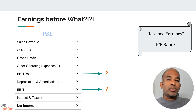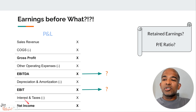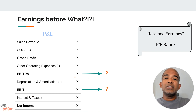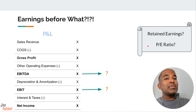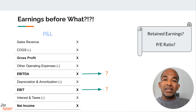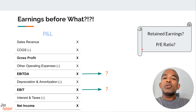EBITDA is a way to measure a company's operating performance without the impact of financing and accounting decisions. Then there's EBIT, or earnings before interest and taxes — quite literally the profit generated before deducting interest and taxes. It's similar to EBITDA, but it includes depreciation and amortization expenses, giving a clearer picture of a company's operating profitability. Next, we have retained earnings, which represents the portion of a company's net income that has been reinvested back into the business rather than being distributed to shareholders as dividends.